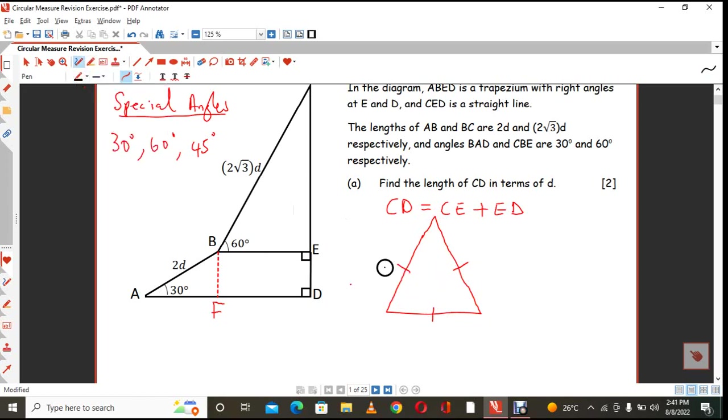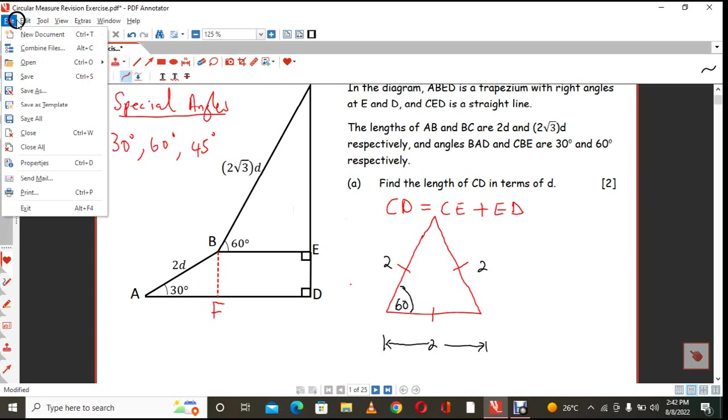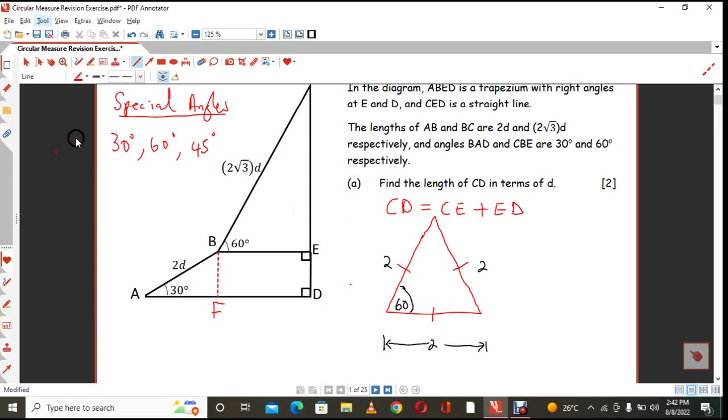At the same time, this angle here will be 60 degrees, for example. So let's suppose that distance is 2 and that distance is 2. This distance under here is also going to be 2 units long. You agree? Now, if we draw a perpendicular line from one vertex, so let's suppose I say we are going to draw a perpendicular line. So let's say we draw a line like so.